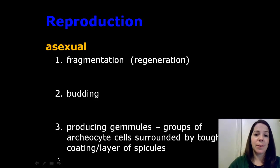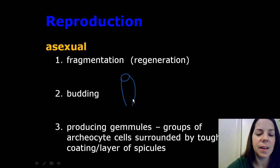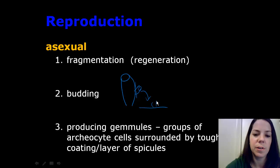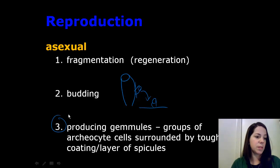Budding refers to a sponge growing a little tiny bud or sponge off the side of it. And then that sponge falls down to the ocean floor and then begins to grow there. And finally,